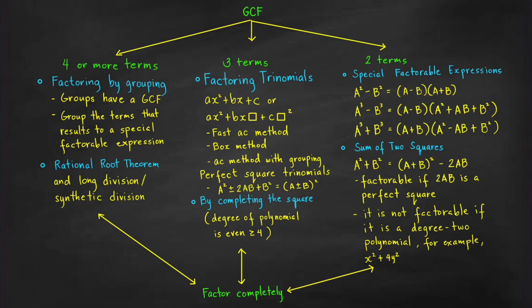If you have three terms — say ax² + bx + c, or ax² + bx·(something) + c·(something)² — then you may try the fast AC method. If you need a review of this, because it's very important to know how to factor this trinomial quickly, please watch my other video. The link is given in the description below.